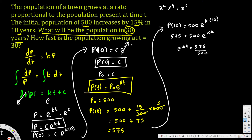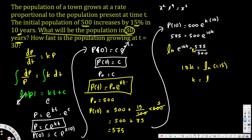Taking the natural log of both sides, ln and e cancel, giving 10k = ln(575/500) = ln(1.15). Therefore k = ln(1.15)/10, which we can also write as (1/10)·ln(1.15). We now have the k value.